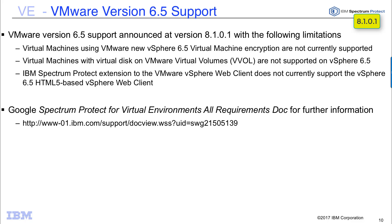There are a couple of restrictions at this time: new VMs with encryption, VMs stored on vVols at version 6.5 (although 6.0 is supported), and the vSphere 6.5 HTML5-based vSphere web client is not currently supported. We are working on those enhancements and expect them in the fairly near future. If you're looking for specific support requirements and versions supported, search for the Spectrum Protect for Virtual Environments all requirements document.